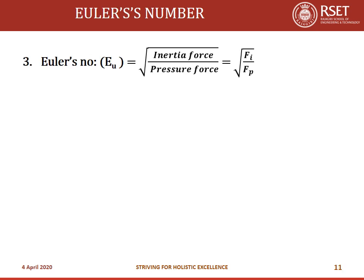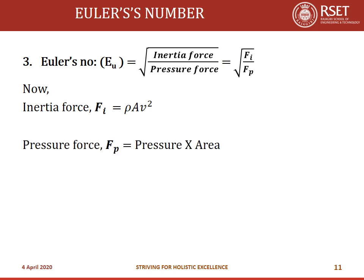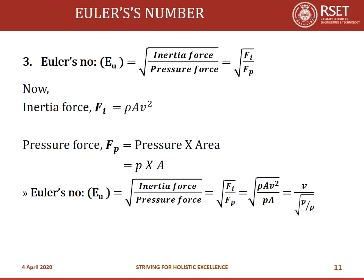Euler's number is √(Fi/Fp) — square root of inertia force by pressure force. Inertia force is ρAV²; pressure force is p·A. Substituting and cancelling area gives Euler's number Eu = V/√(p/ρ).